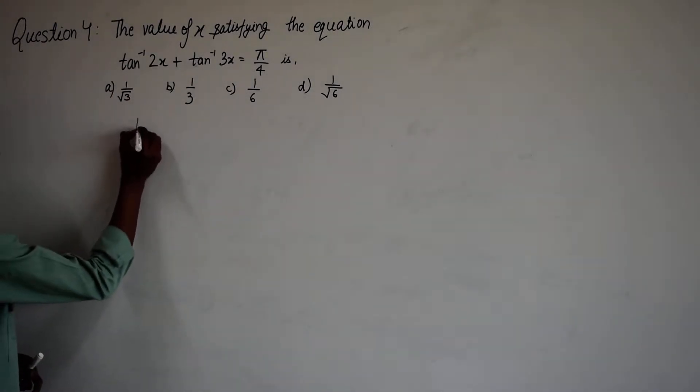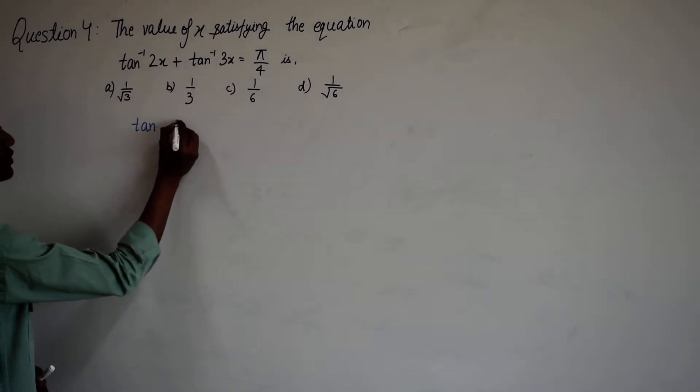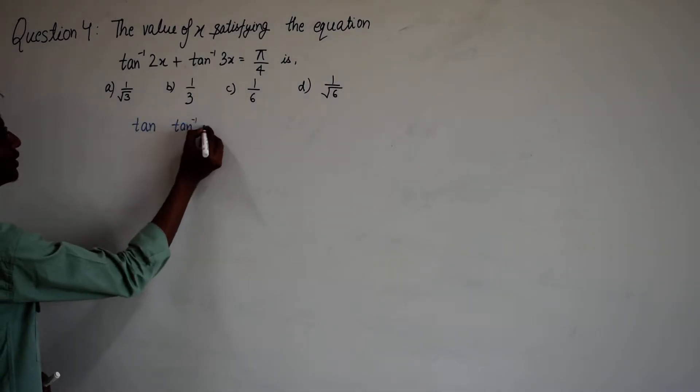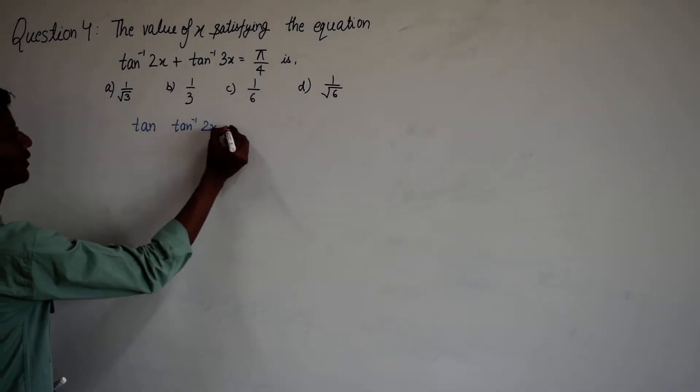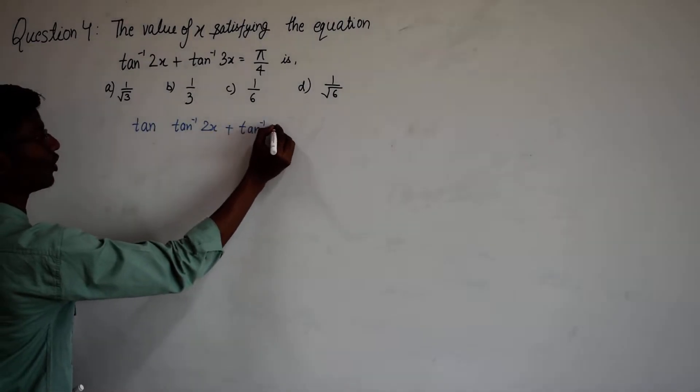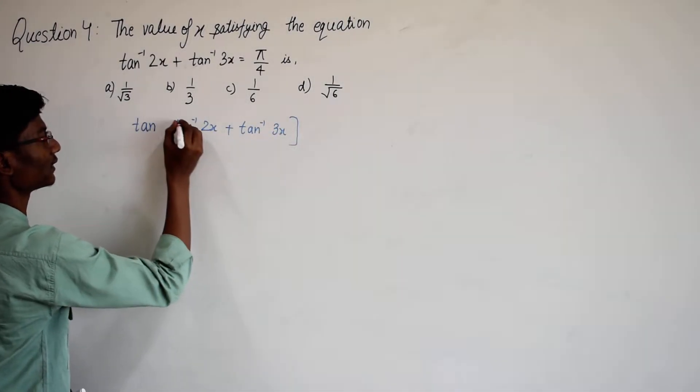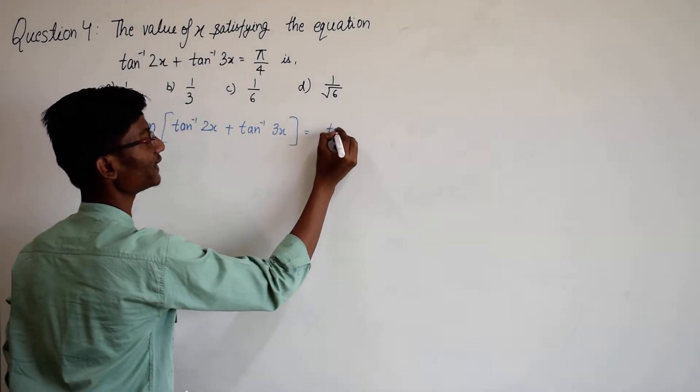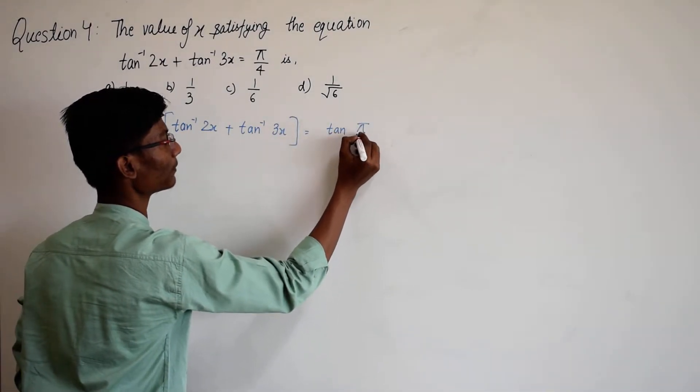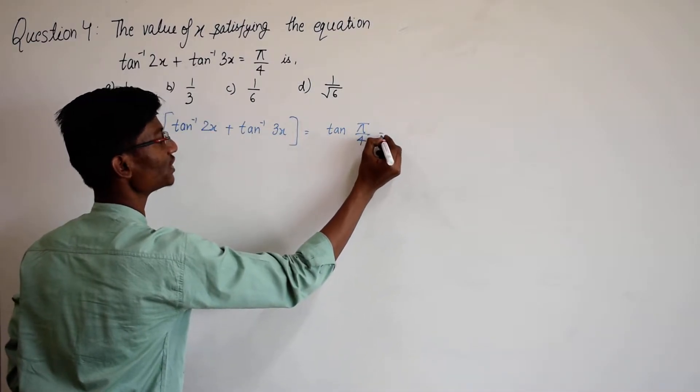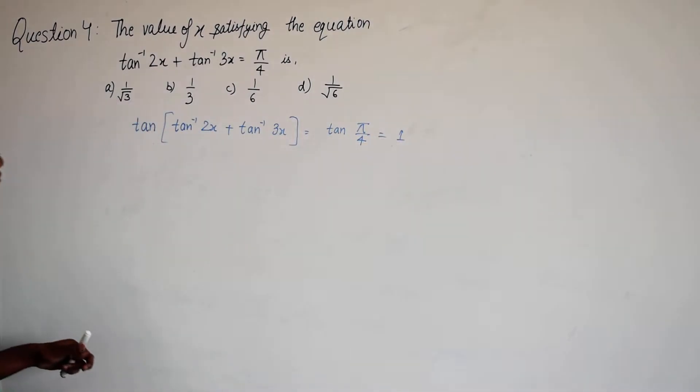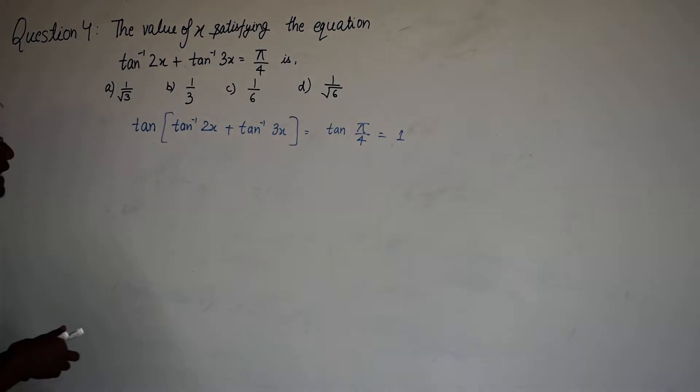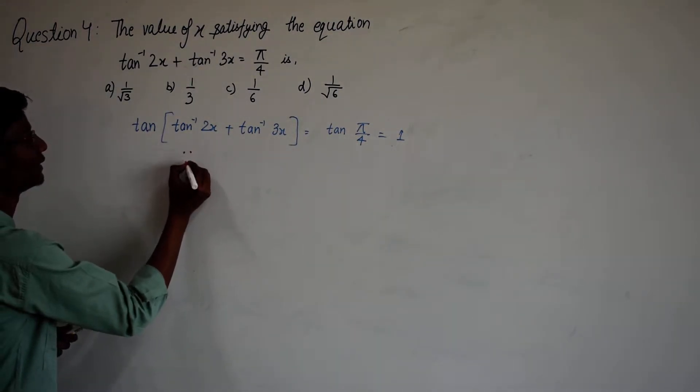So we will get tan of tan inverse 2x plus tan inverse of 3x, and on the right hand side we will get tan of pi by 4 which is equal to 1. Now applying the identity.